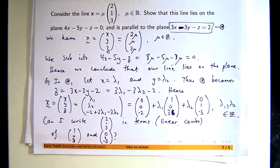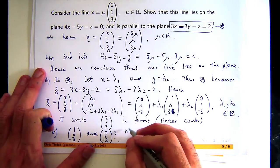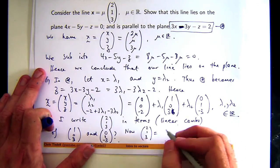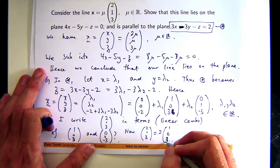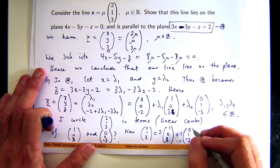Two times this plus one times that is a linear combination of the two things. (2, 1, 3) is two times this vector plus one times this vector.